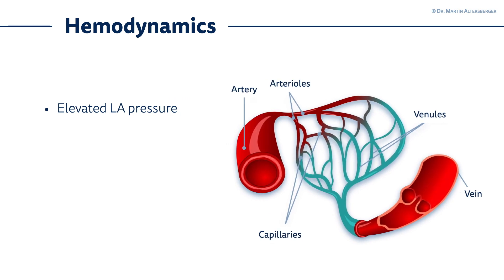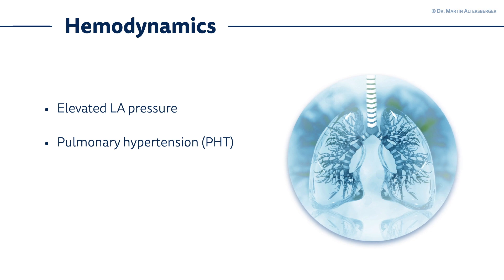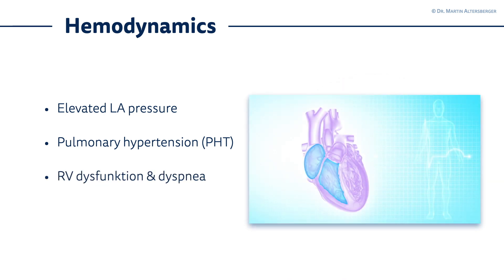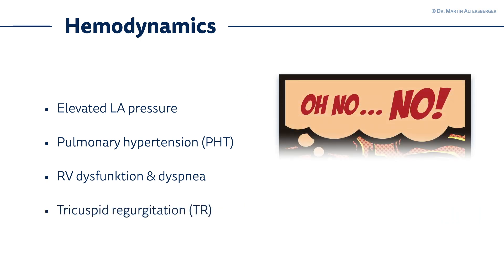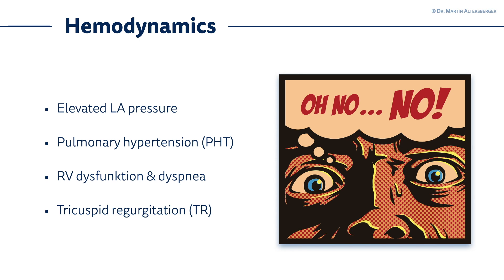Before we start to perform echocardiographic measurements, we have to understand the hemodynamics. First of all, there will be an elevated left atrial pressure. The left atrium is a low-pressure system, so if the pressures in the left atrium rise, it will lead to pulmonary hypertension. Elevated left atrial pressures lead to pulmonary hypertension, and in case of pulmonary hypertension, we will have right ventricular dysfunction and dyspnea. When we have right ventricular dysfunction and probably right ventricular dilatation in a dyspneic patient, tricuspid regurgitation will also be more severe compared to a normal functioning right ventricle.